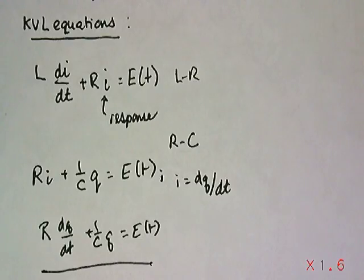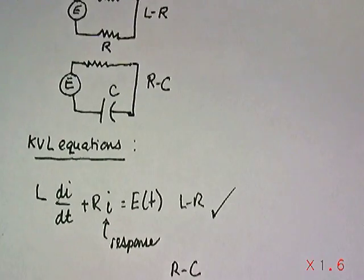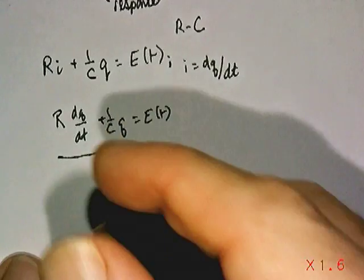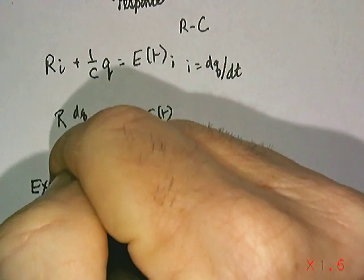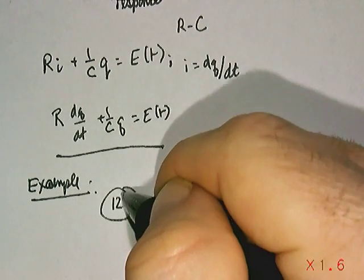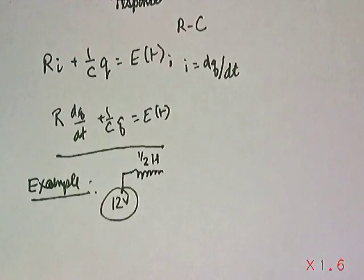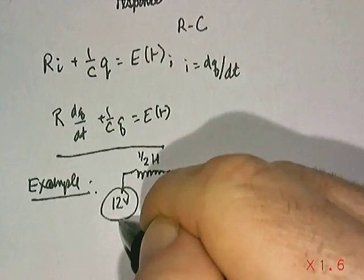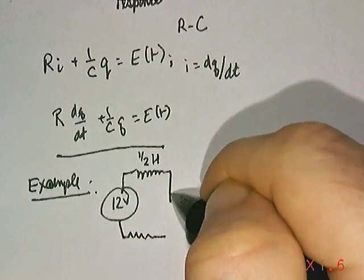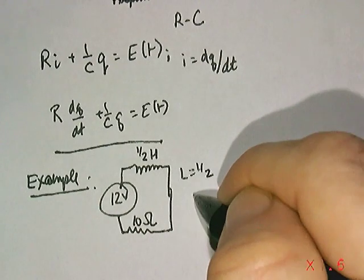We're going to do a particular example, an LR circuit application. Suppose we had a 12-volt battery connected to an inductance of one-half Henry, and that is in series with the resistance of 10 ohms. Those are values for those particular constants we mentioned before. In this particular problem, L equals one-half, R equals 10.